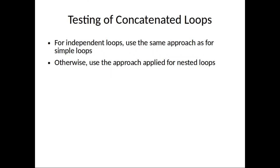Concatenated loops can be tested using the approach for simple loops if each loop is independent of the others. However, if two loops are concatenated and the loop counter for loop one is used as the initial value for loop two, then the loops are not independent. When loops are not independent, the approach applied to nested loops is recommended.